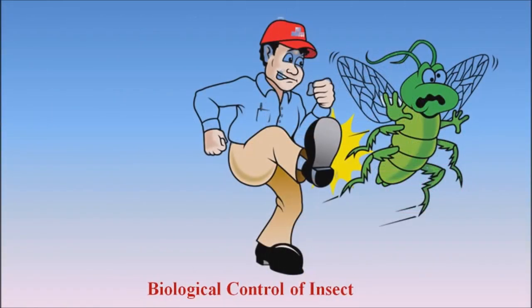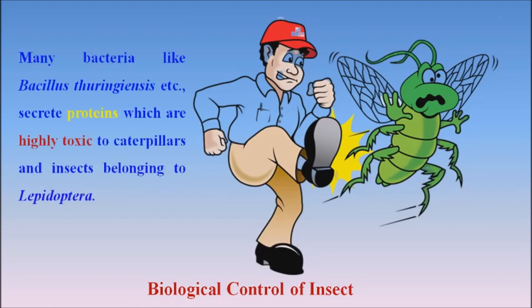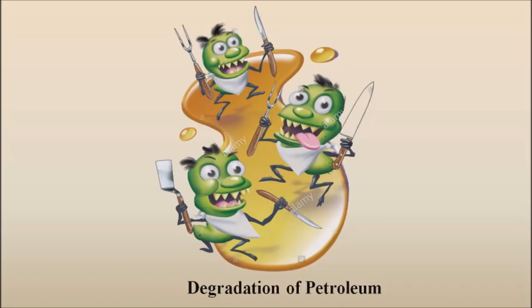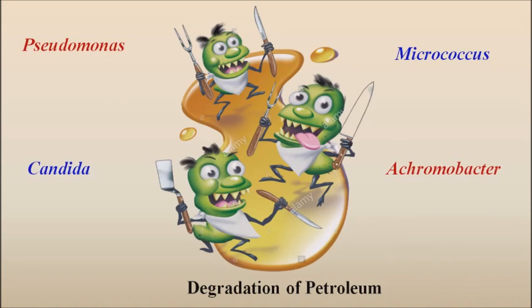Now we will discuss the biological control of insects. Many bacteria like Bacillus thuringiensis secrete proteins which are highly toxic to caterpillars and insects belonging to Lepidoptera, but are non-toxic to other animals and plants. Thereby these bacteria are used as ideal agents for biocontrol of insects. The next use of microorganisms is degradation of petroleum. Many bacteria like Pseudomonas, Micrococcus, Candida and Achromobacter are able to degrade petroleum hydrocarbons in water, thereby controlling pollution.